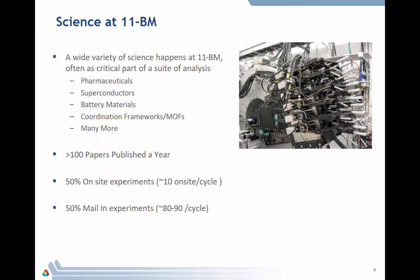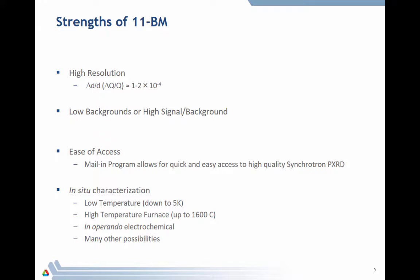So let's talk a little bit about some science at 11-BM. We measure a wide variety of different sorts of science. This is inherent because of our mail-in sample. We measure on the order of 1,000 samples a year through the mail-in program. It's half our time. We have over 100 papers published a year coming from the program, a mix between on-site and mail-in things. Last year was a good year. There was a jump to 140 papers. As I said, half our time is on-site experiments, which is normally 10 on-site proposals a cycle. Usually an on-site proposal is somewhere between three and five days. And 50% of our time is mail-in experiments, roughly 80 to 90 a cycle.